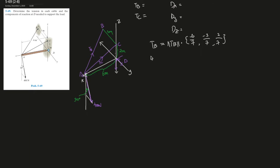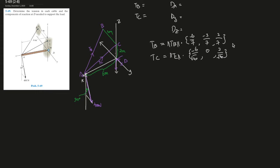Do the same thing for TC - tension at C is magnitude of TC times its unit vector. TC has negative 6 in x, y didn't change so it's 0, and z is 2 - the same z-component as TB. The magnitude is the square root of 36 plus 4, which is the square root of 40. Since y is 0, you don't have to write that component.